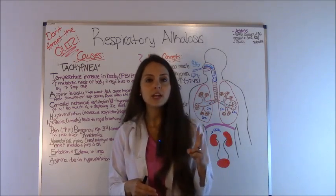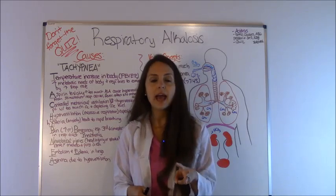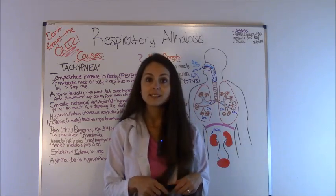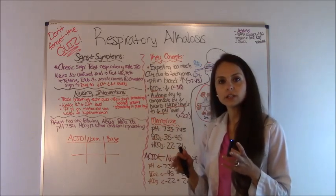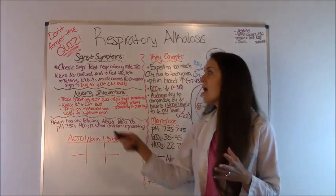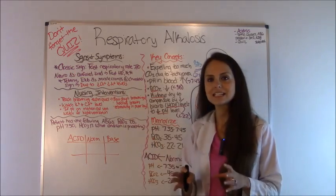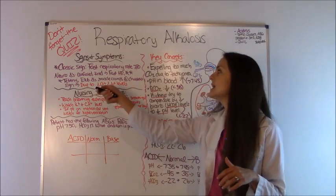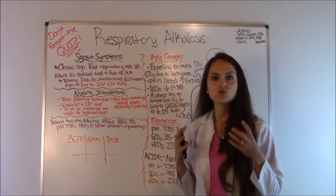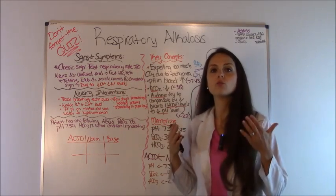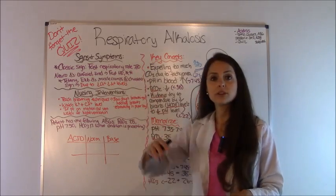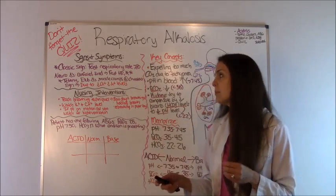Now let's talk about how these patients are going to look to you as the nurse when they're in respiratory alkalosis. One of the most classic signs — if you can't remember any other sign — is that the patient is going to have a very fast respiratory rate, really breathing hard, with a rate greater than 20 and sometimes up into the 40s, just really hyperventilating.